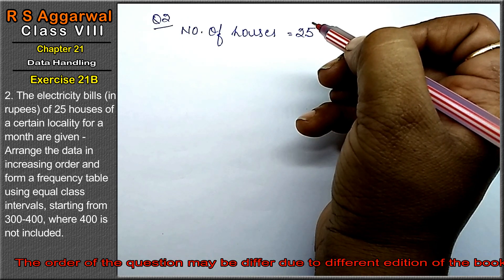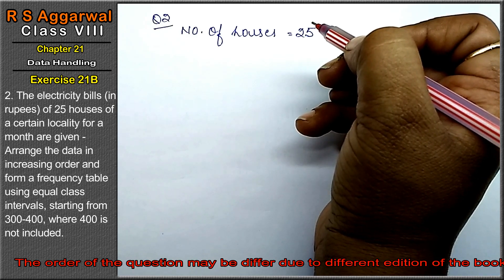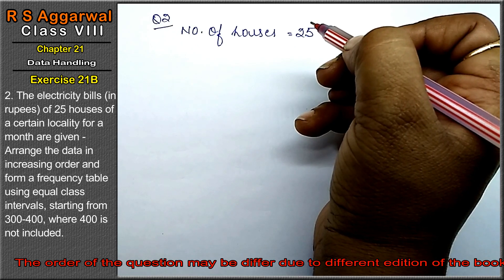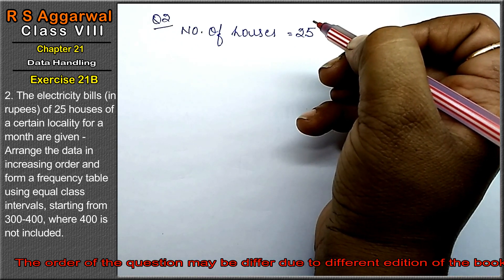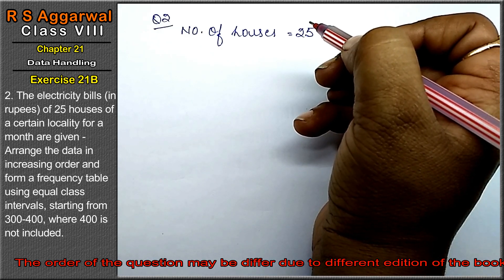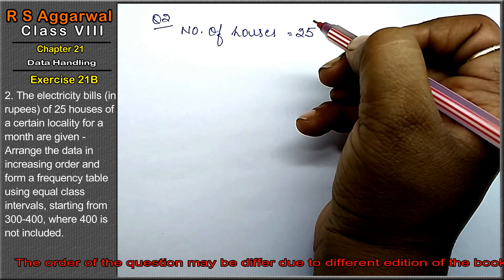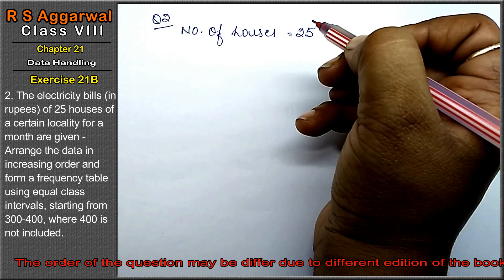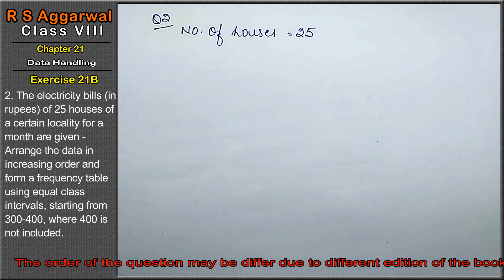Arrange the above data in increasing order and form a frequency table using equal class intervals starting from 300 to 400, where 400 is not included. We have to put the above data in increasing order and form a frequency table.